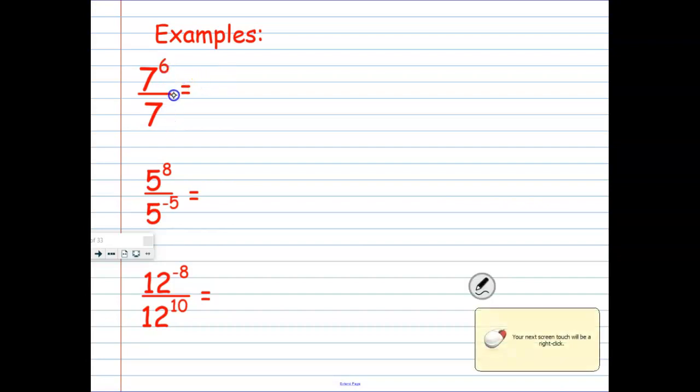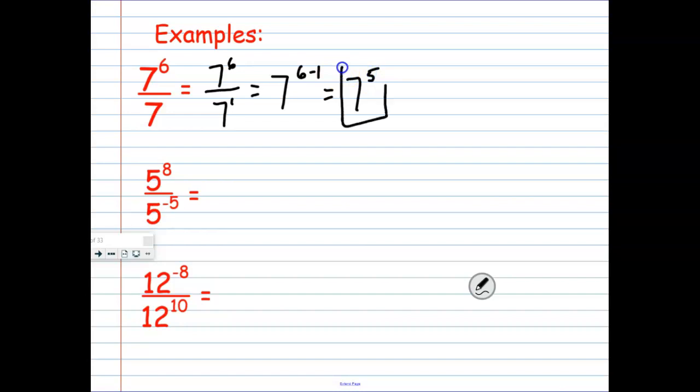7 to the 6th over 7 to the 1st, that is the same as, it's got that secret one there. So go ahead and rewrite it with the secret one, just to make it really clear. And then that is 7 to the 6th minus 1, which is 7 to the 5th power as our final answer here. Because again, bases are the same, we're dividing, we're going to subtract the exponents. Here we have bases are the same as 5. So we have 5 to the 8th power minus negative 5. We know minus minus turns into a plus. So we have 5 to the 8 plus 5, which gives us 5 to the 13th power.